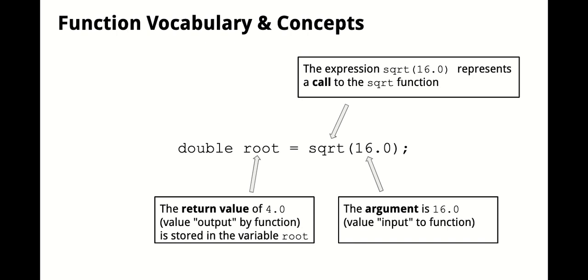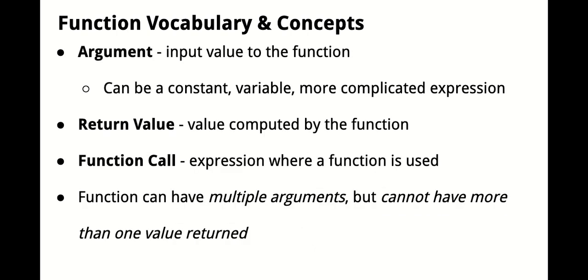So again, a function call, any expression that uses the function. The argument is essentially what you're inputting into it, and the return value for functions that give us values back is what the function produces as an output. To recap some important vocabulary, the argument is just the input value to the function. That can be a constant, like you saw on the last slide with 16.0, it could be the name of a variable that has a value in it, or a more complicated expression involving both variables and constants. The return value is just what the function computes and gives you back, basically the output of that function. And a function call is just any expression you see where a function is used. And a function can definitely have multiple arguments. Think back to the pow function that had two arguments in it, but you cannot have more than one value return. A function can only give you back one value.